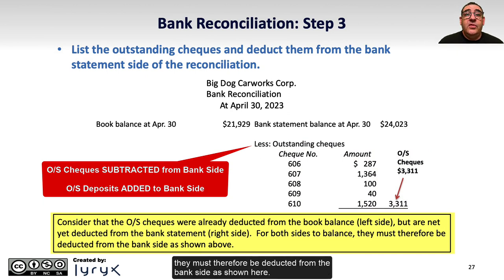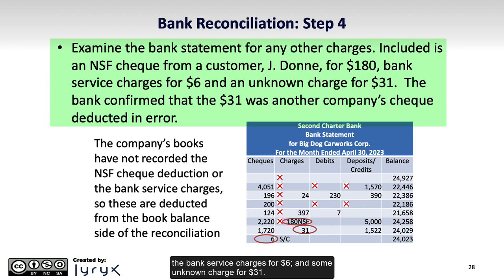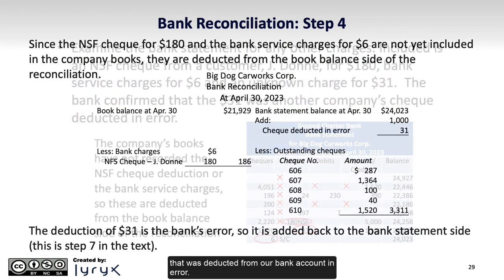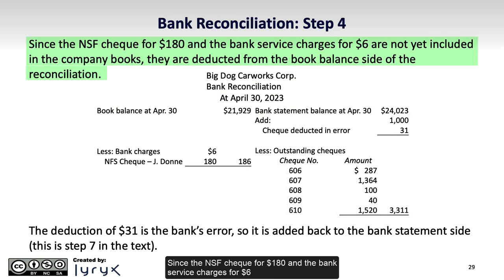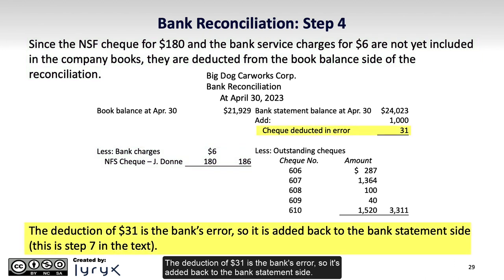The outstanding checks have already been deducted from the book balance on the left side, but are not yet deducted from the bank balance on the right side. For both sides to balance, they must therefore be deducted from the bank side, as shown here. In Step 4, we examine the bank statement for any other charges. Included here are an NSF check from a customer, J. Don, for $180, bank service charges for $6, and an unknown charge for $31. The bank confirmed that the $31 was another company's check deducted from our bank account in error. Since the NSF check for $180 and the bank service charges for $6 are not yet included in the company books, they are deducted from the book side of the bank reconciliation. The $31 deduction is the bank's error, so it's added back to the bank statement side.